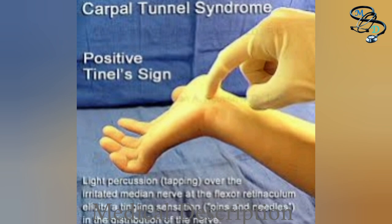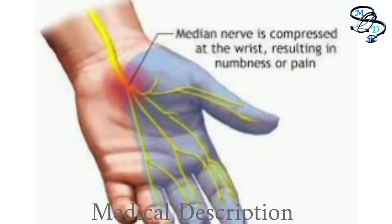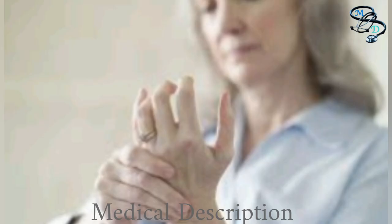A number of factors have been associated with carpal tunnel syndrome. Although they may not directly cause it, they can increase the risk of irritation or damage to the median nerve. Anatomic factors — a fracture, dislocation, or arthritis that deforms the small bones in the wrist — can alter the space within the carpal tunnel and put pressure on the median nerve. People who have a smaller carpal tunnel may be more likely to have carpal tunnel syndrome.